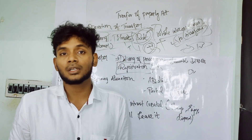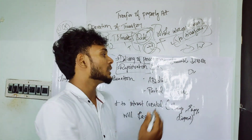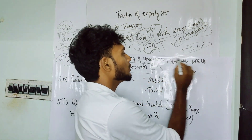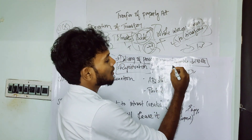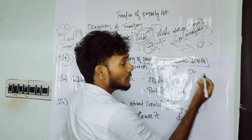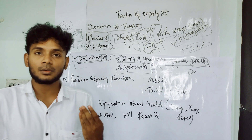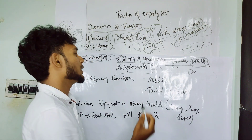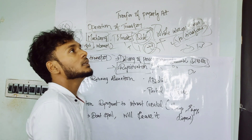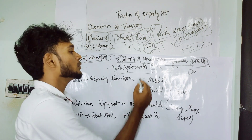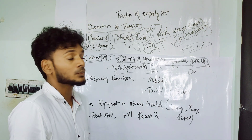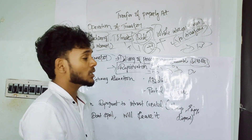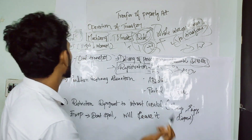For immovable property, oral transfer is capable when the value is below 100 rupees. If immovable property is below 100 rupees value, you can transfer it by oral. If immovable property is above 100 rupees, you have to register it. The document can be registered to transfer ownership. After registration, the agreement must be followed up - that is oral transfer under Section 9.